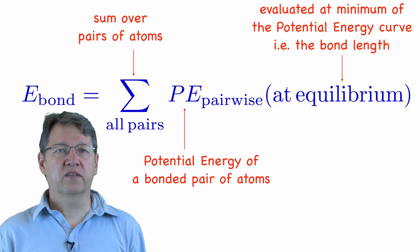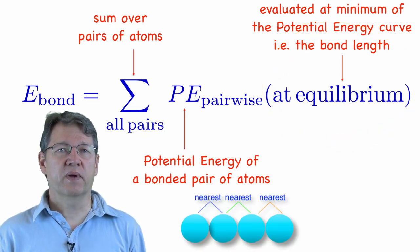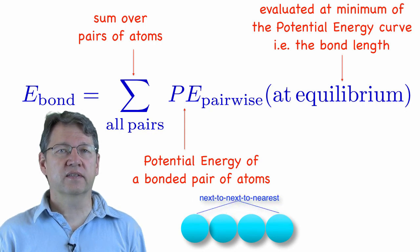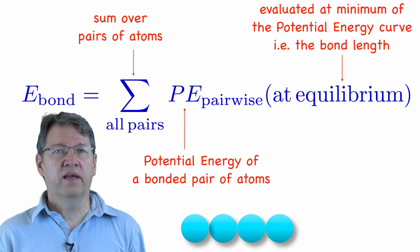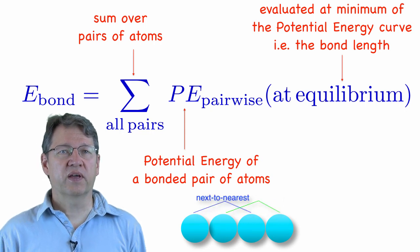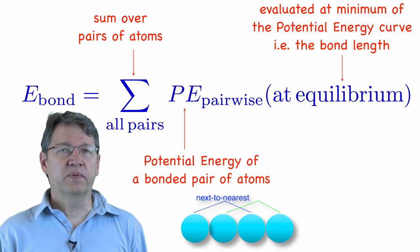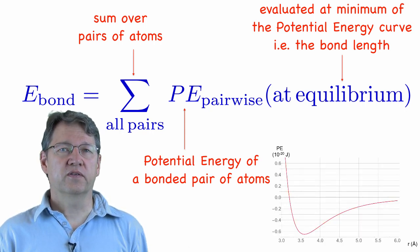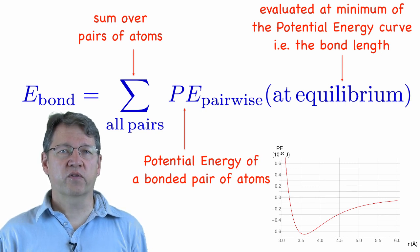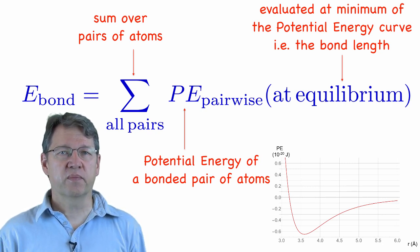Usually, we can make the approximation that we only add up the nearest neighbor pairs, but if we need a more accurate answer, we could also include next-to-nearest neighbors, and next-to-next-to-nearest neighbors, and so on. If we include next-to-nearest neighbors, then we have to evaluate the potential energy at the distance between these more widely separated atoms. Generally, the potential energy goes toward zero at larger distances, so these longer bond lengths contribute a smaller amount to the bond energy than the nearest neighbors.